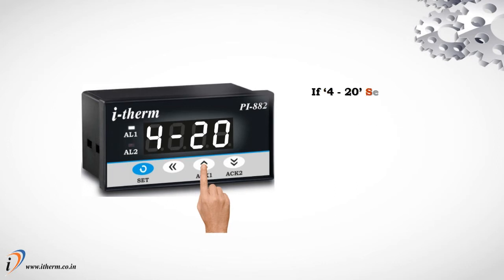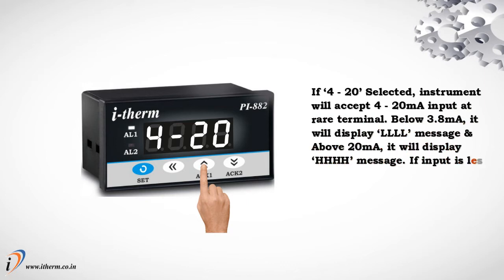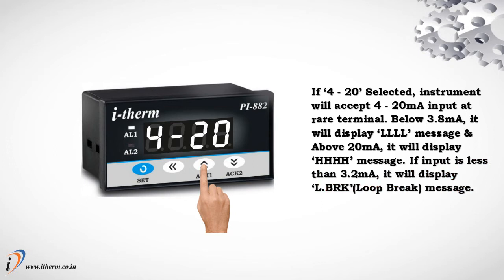If 4 to 20 mA is selected, the instrument will accept 4 to 20 milliampere input at the rear terminal. Below 3.8 milliampere it will display LLLL, and above 20 milliampere it will display HHHH. If the input is less than 3.2 milliampere, it will display a Loop Break message.